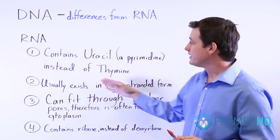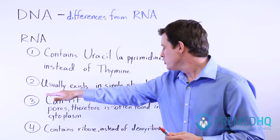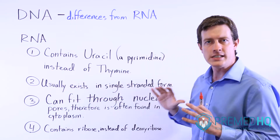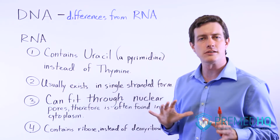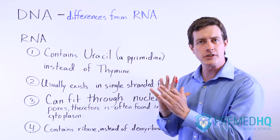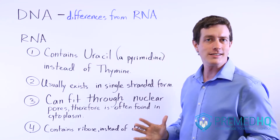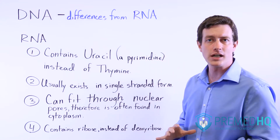Secondly, RNA usually exists in single-stranded form, whereas DNA you tend to find in a double helix with complementary anti-parallel strands.